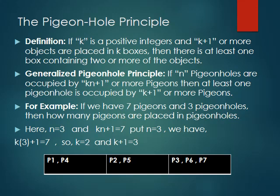So k equals 2, meaning at least two pigeons per hole, and k plus 1 equals 3, so one box will have three pigeons. The third box gets P3, P6, and P7 — one extra pigeon must be adjusted there. This is the Pigeonhole Principle: given number of holes and pigeons, we use the formula kn plus 1.